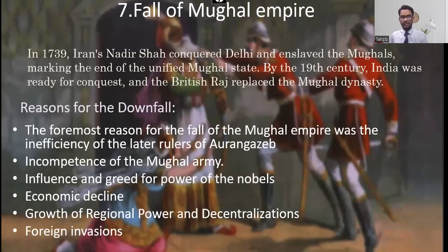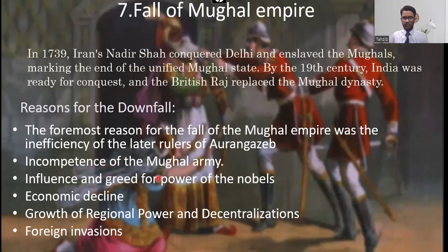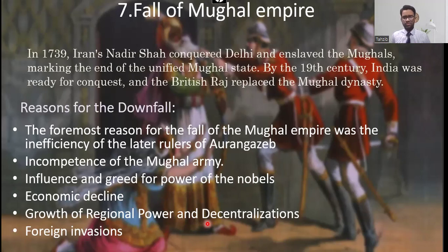The fall of the Mughal Empire began when Nader Shah of Iran conquered Delhi in 1739. Key reasons for the downfall include the incompetence and inadequate equipment of the Mughal army compared to foreign powers with modern ammunition, infighting and greed for power among nobles, economic decline, and the growth of regional powers. The 18th century saw the rise of Nawabs and small kingdoms with decentralization, and ultimately foreign invasions hastened the empire's fall.